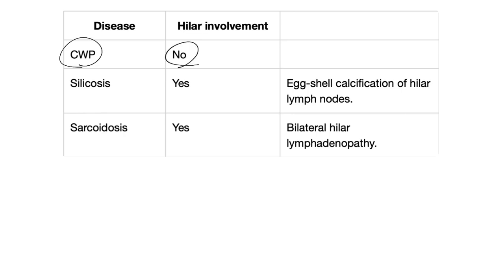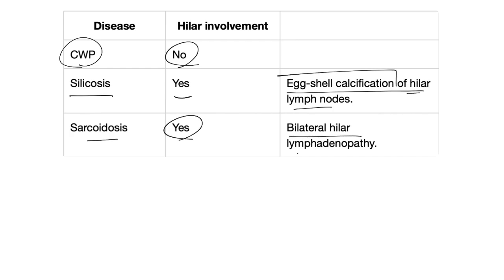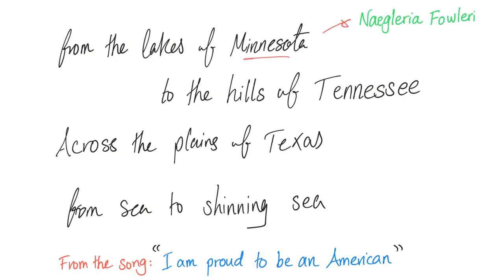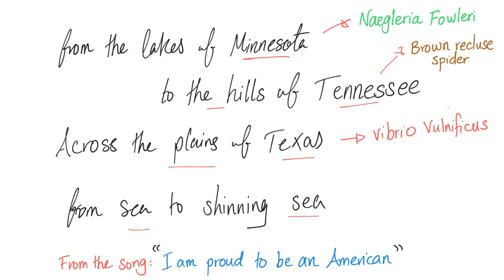Coal worker's pneumoconiosis has no hilar involvement. Silicosis does have hilar involvement with eggshell calcification of the hilar lymph node. Sarcoidosis has bilateral hilar lymphadenopathy with non-caseating granuloma on biopsy. Geographic mnemonics: from the lakes of Minnesota — Naegleria fowleri — to the hills of Tennessee — brown recluse spider. Across the plains of Texas — Vibrio vulnificus. From the Atlantic with blastomycosis to the Pacific with coccidioidomycosis.